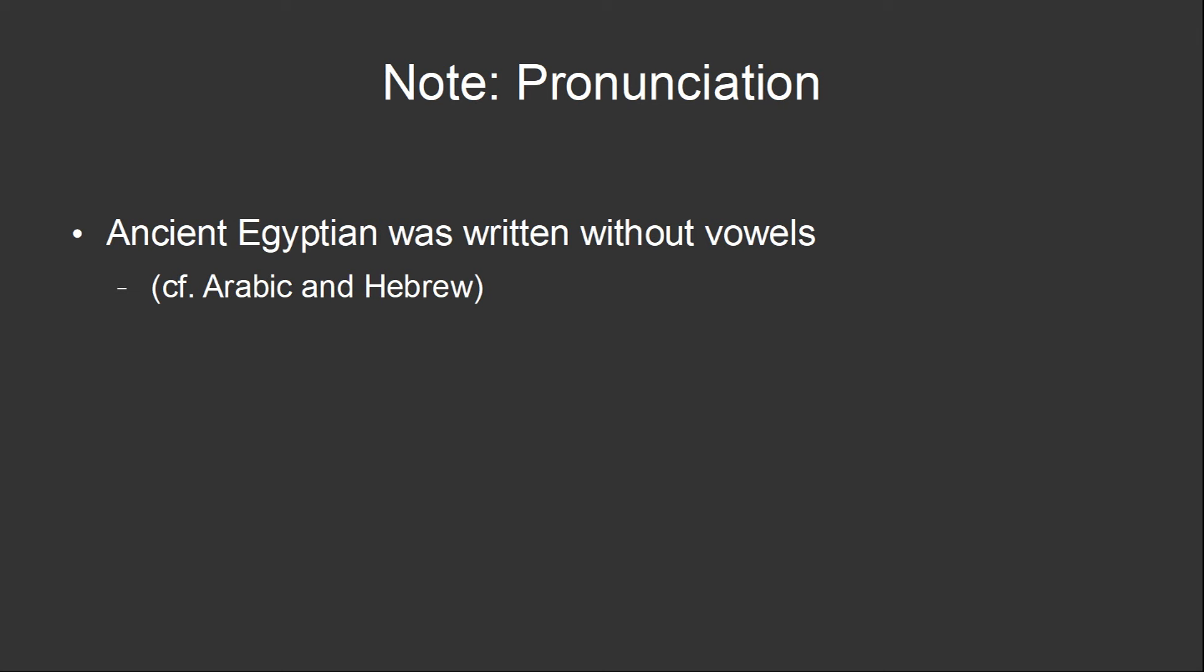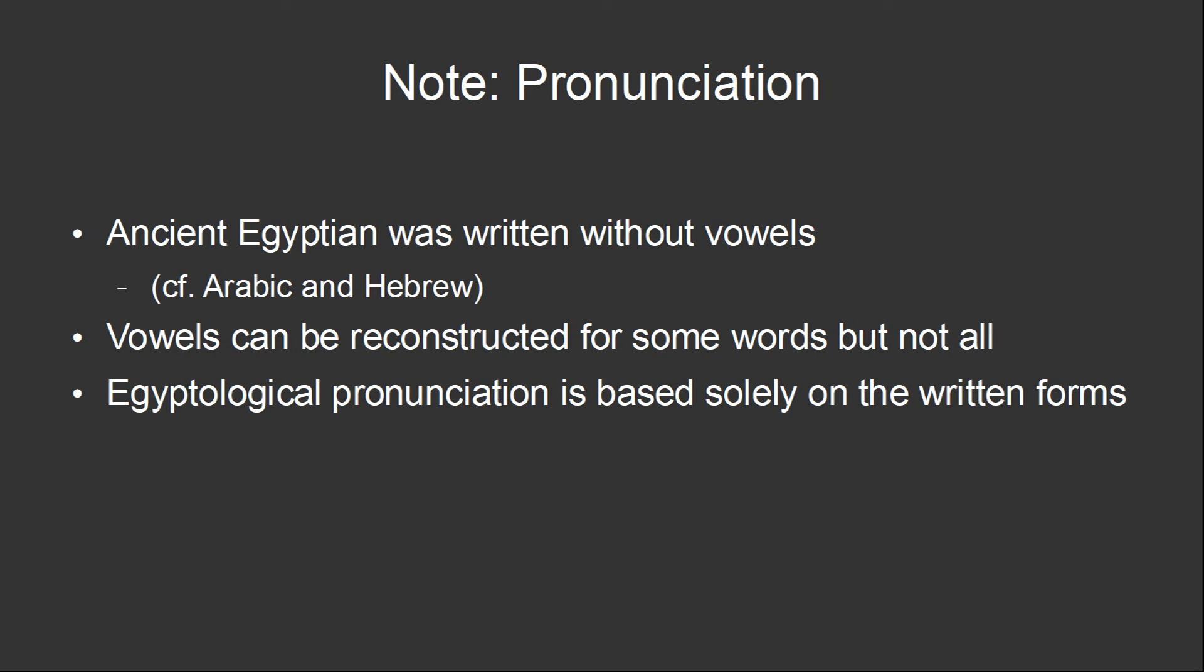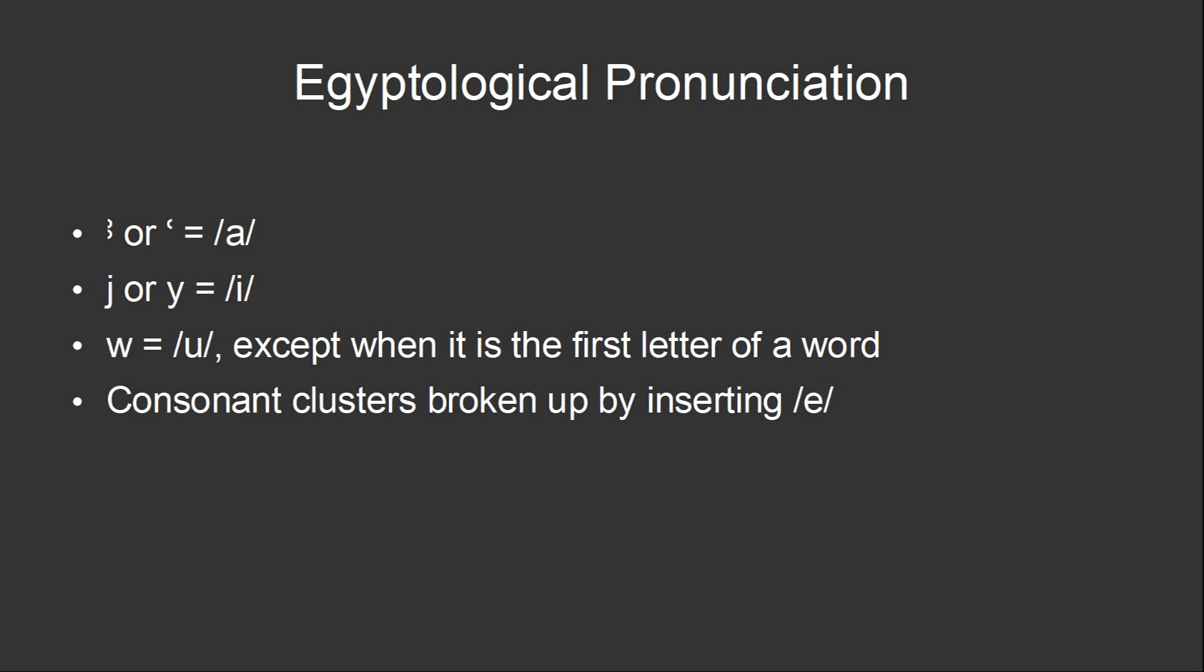Egyptian was written without vowels, as for example, modern Arabic and Hebrew still are. For some words, it's possible to reconstruct what the vowels were based on the Coptic language, which is the modern descendant of Egyptian, or based on how Egyptian words, and especially names, were written in languages like Greek or Akkadian, which did write vowels. For many words, however, it's not possible to accurately reconstruct the vowels. In order to be consistent and to make it easy to pronounce words based just on the written form, the Egyptological pronunciation was invented. Certain consonants are pronounced as vowels, I or E, and U, and then the vowel E is inserted to break up any consonant clusters.